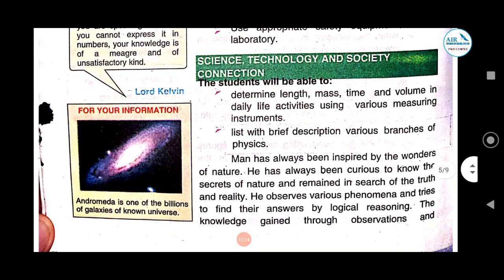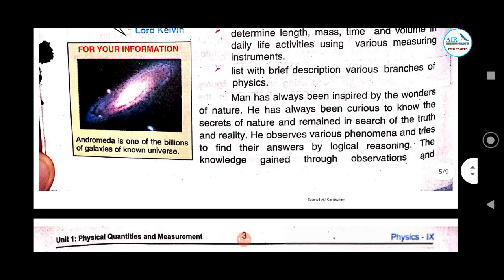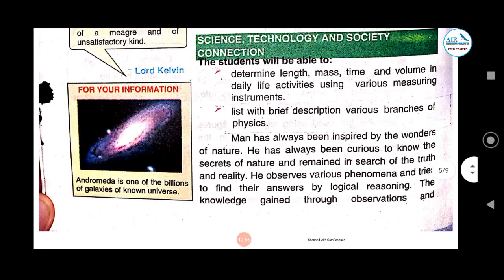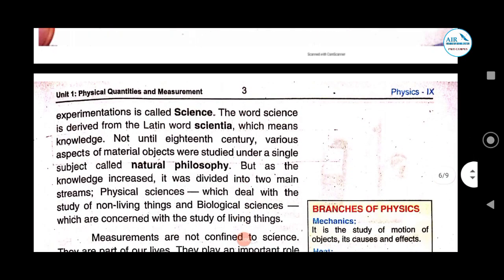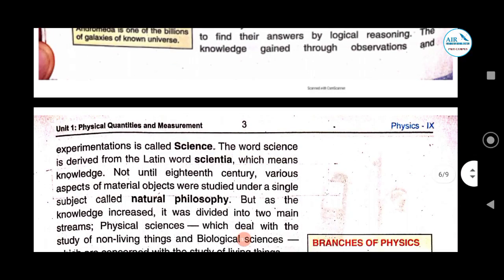Here we come up with Science, Technology and Society — how they are linked with each other. What is science? As I already told you while teaching the science subject: the knowledge that is gained through experimentation and observations is known as science. This is the basic definition of science — the knowledge gained through observations and experimentation is called science.